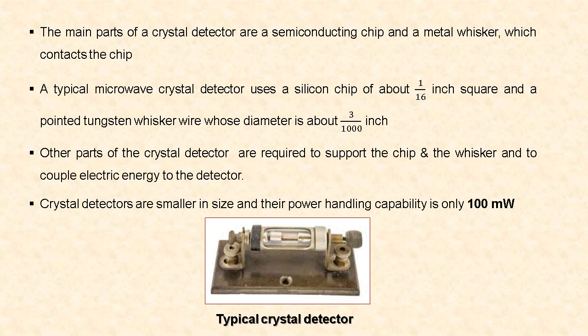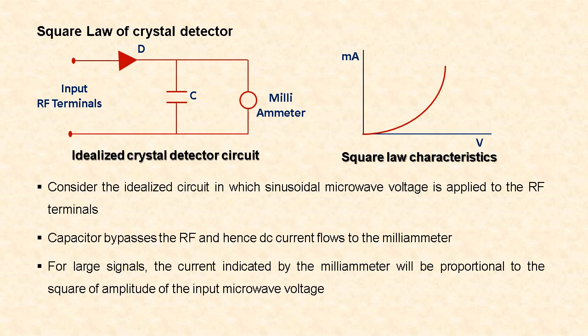The figure shows a typical crystal detector or cat whisker detector. Considering an ideal crystal detector circuit which has a diode, a capacitor, and a milliammeter: the input sinusoidal microwave voltage is applied to the RF terminals. The capacitor bypasses the radio frequency signals, and hence only the DC current flows to the milliammeter when the input signal is small.